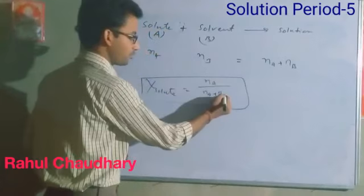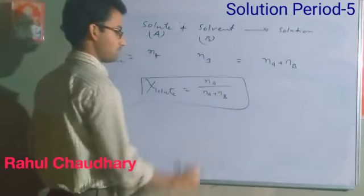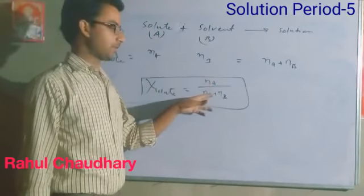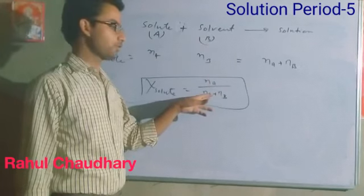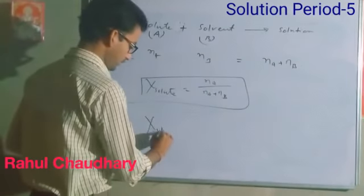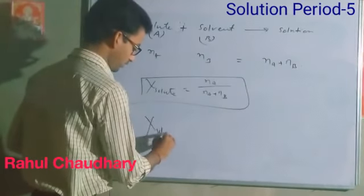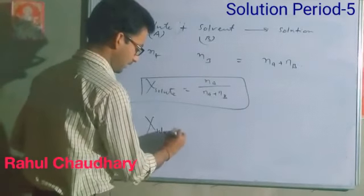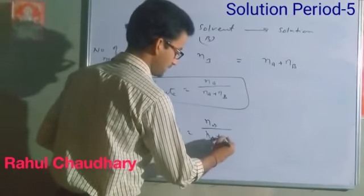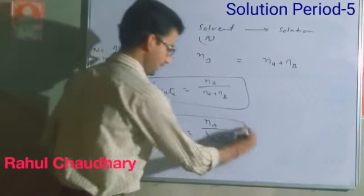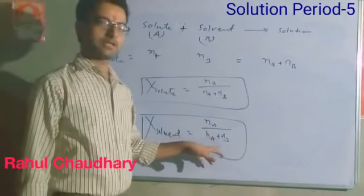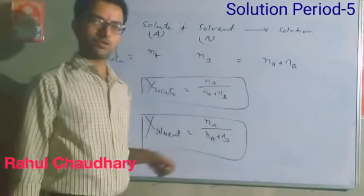This is the mole fraction of solute — the ratio of total number of moles of solute present to the total number of moles of solution. Now, talking about mole fraction of solvent, that means Nb divided by Na plus Nb.